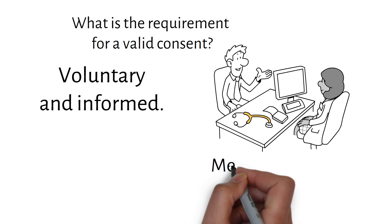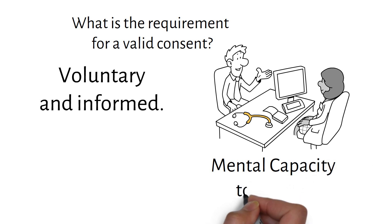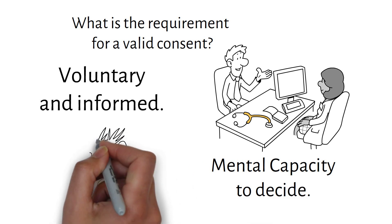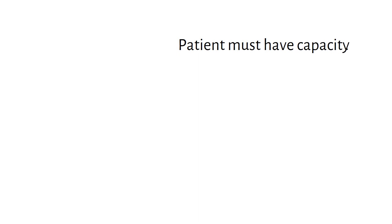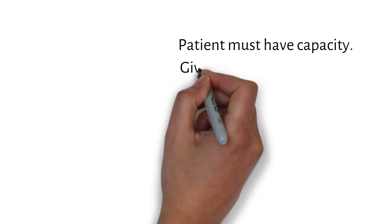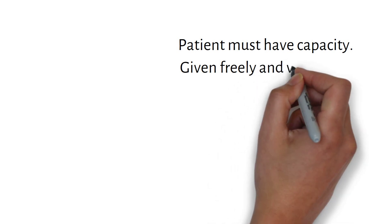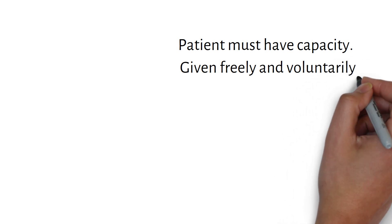The consent must be given freely and voluntarily. It should be sufficiently specific to the procedure or treatment being proposed, and it should be well informed. By 'freely' we mean medical staff, friends, or family should not influence or pressurize the person giving consent. By 'informed' we mean that all information should be provided about the treatment, including the risks and benefits, whether there are any reasonable alternative treatments, and what will happen if the treatment does not go ahead.